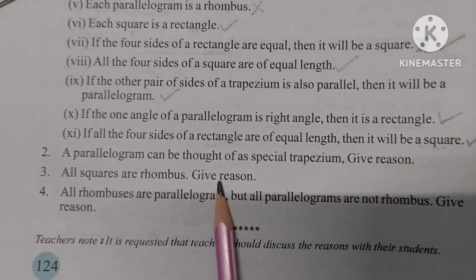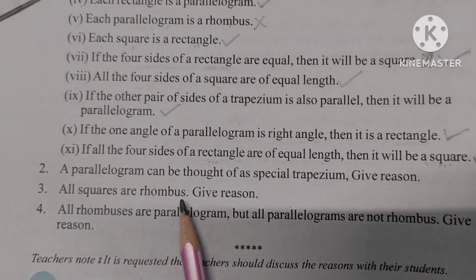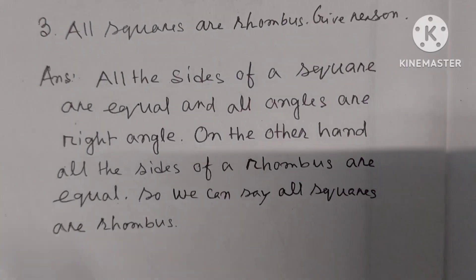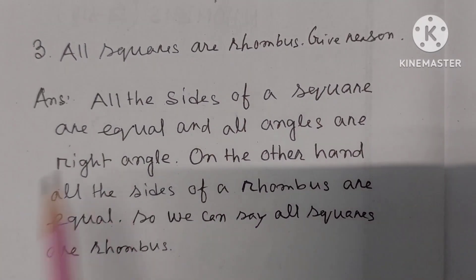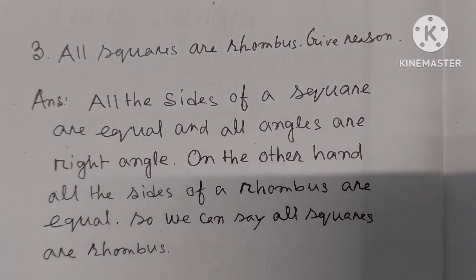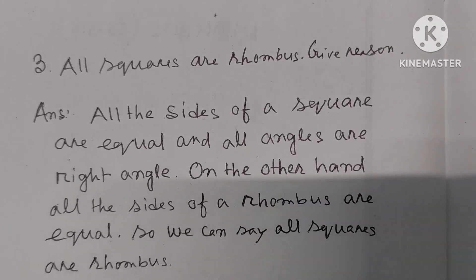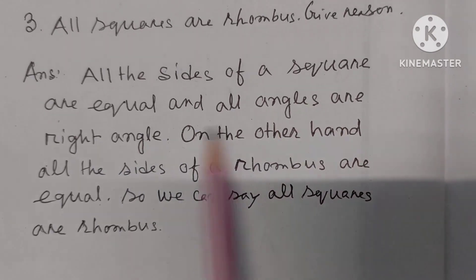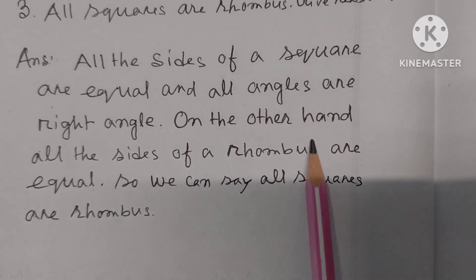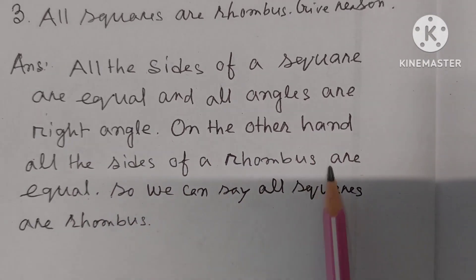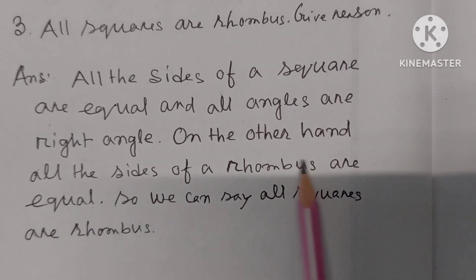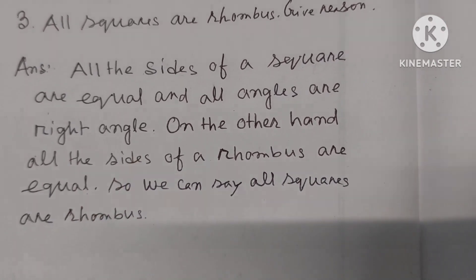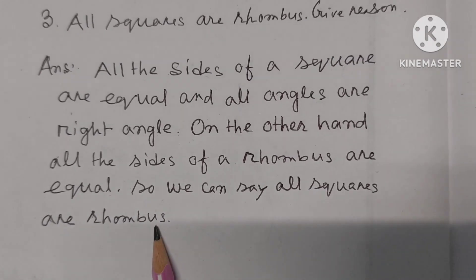Number 3: All squares are rhombuses. Give reason. All the sides of a square are equal, and all angles are right angles. Since a rhombus also has all sides equal, a square satisfies the properties of a rhombus. Therefore, all squares are rhombuses.